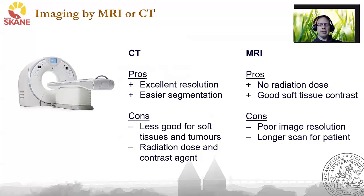In Lund, we currently use either CT or MR images. The advantages of CT are excellent resolution and somewhat easier segmentation. The disadvantages are that it's generally less good for soft tissue and tumors, it's an ionizing technology, and many cases also require a contrast agent, which can be challenging for patients with poor kidney function. For MRI, the main advantage is no radiation dose, so it's completely safe. There is good soft tissue contrast, especially for tumors. Disadvantages include poor image resolution and longer scan times.